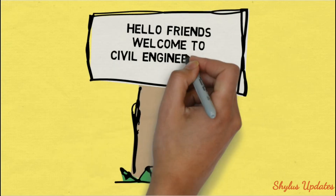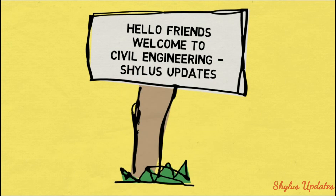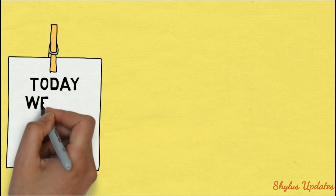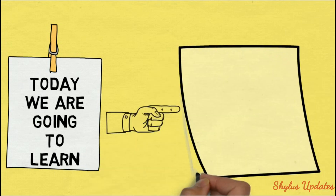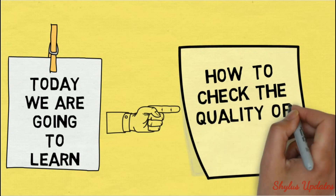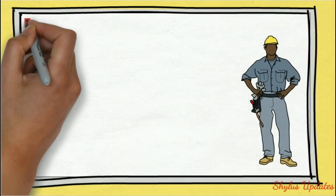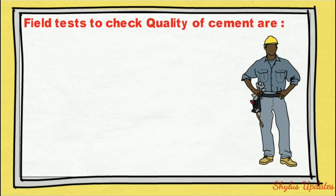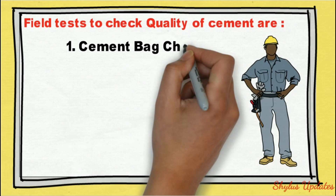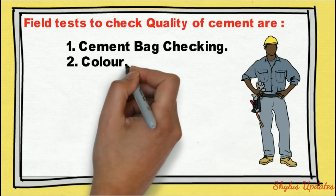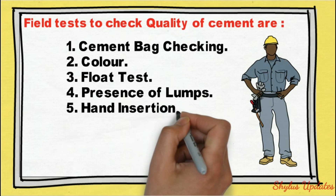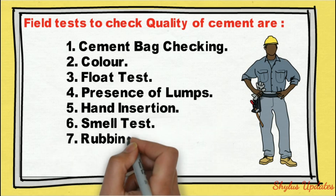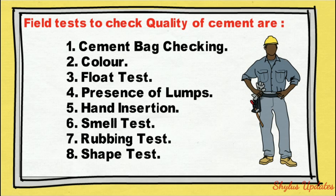Hello friends, welcome to Civil Engineering Shilu's Updates. Today we are going to learn how to check the quality of cement at sites. Field tests to check quality of cement are: cement bag checking, color, flow test, presence of lumps, hand insertion, smell test, rubbing test, and shape test.